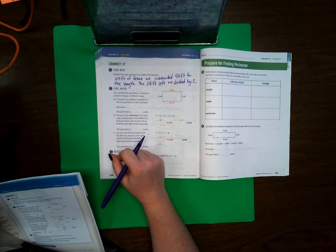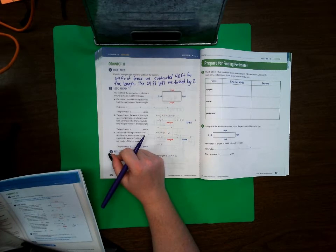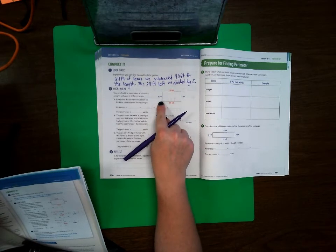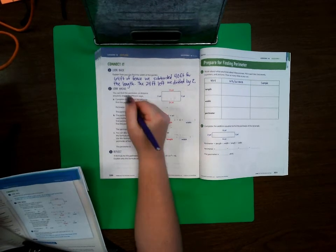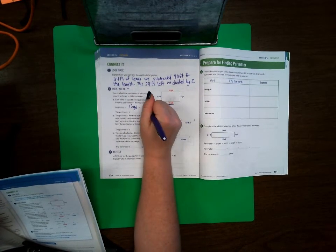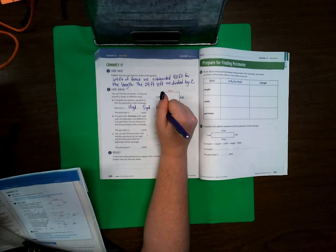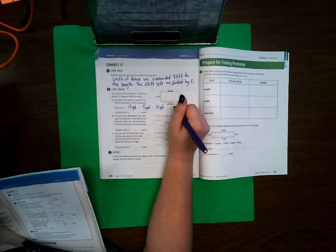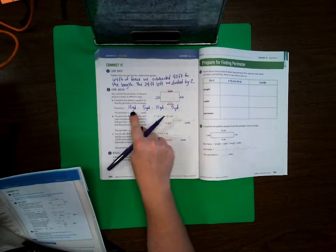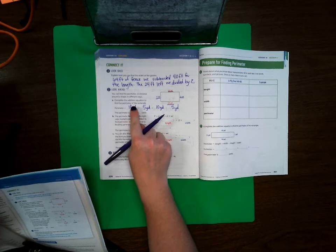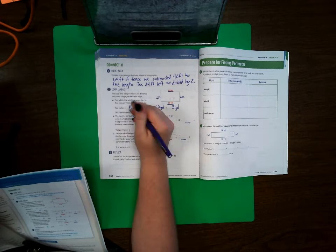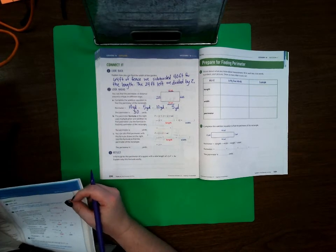The 24 feet left we divided by 2. Right, so right here it says you can find the perimeter or distance around a shape in different ways. Complete the addition equation to find the perimeter of the rectangle. So we're looking at this rectangle right here, so we're going to, let's start at the bottom: 10 yards, 5 yards, 10 yards, 5 yards. So we went all the way around and we're going to add those together. So the perimeter is 10 plus 10 is 20, plus 20 makes 25, 30 yards.